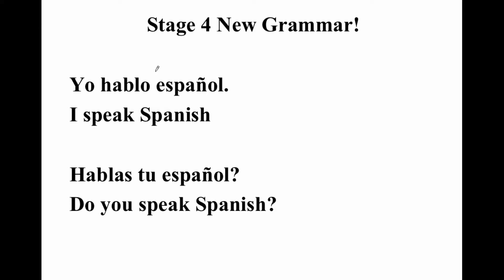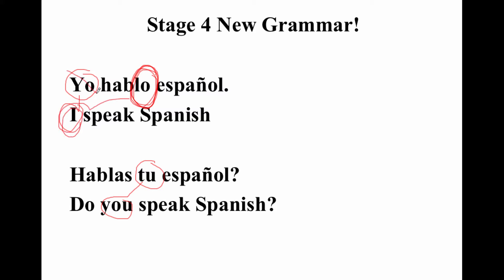Guess what — yo is the pronoun. Yo in Spanish is I. Tú is a pronoun. Tú in Spanish means you. But you maybe already know the -o of 'hablo.' The -o of 'hablo' also means I. In fact, you don't need yo at all. You can just say 'hablo español' and it means 'I speak Spanish.'